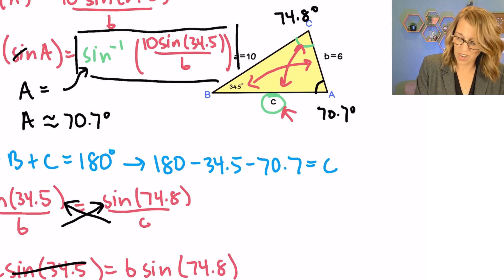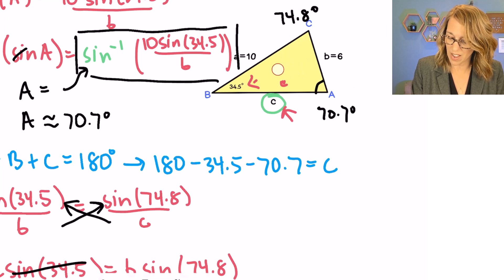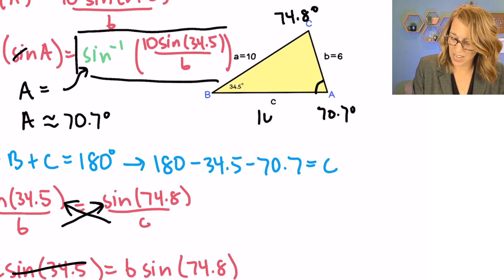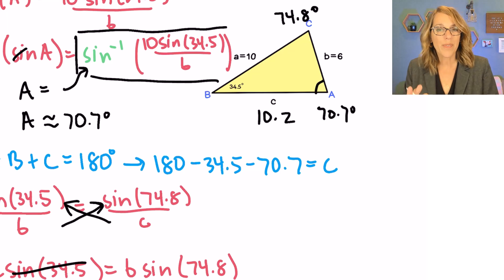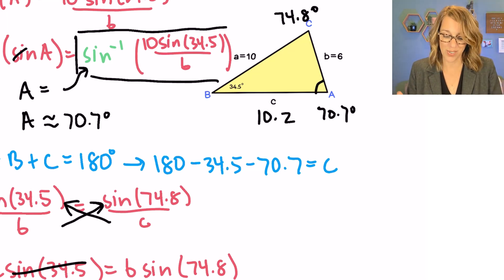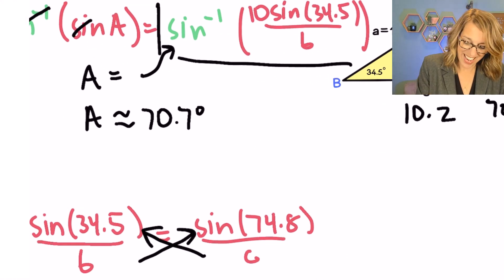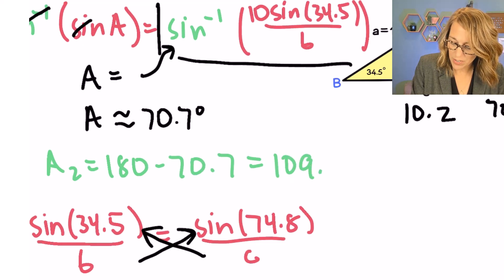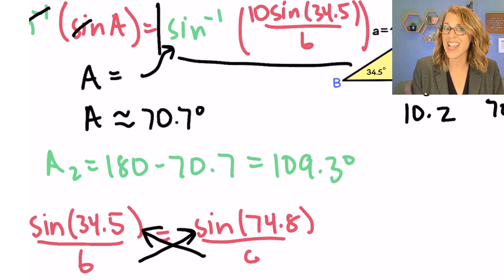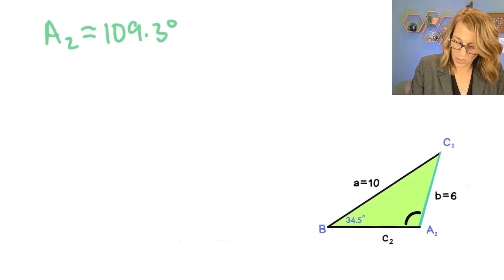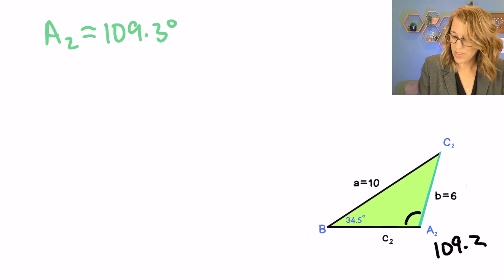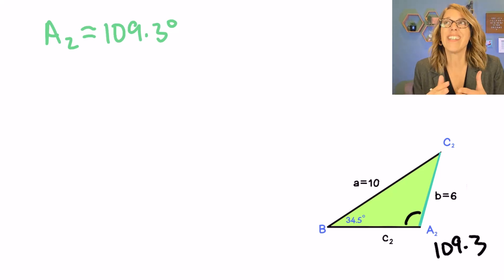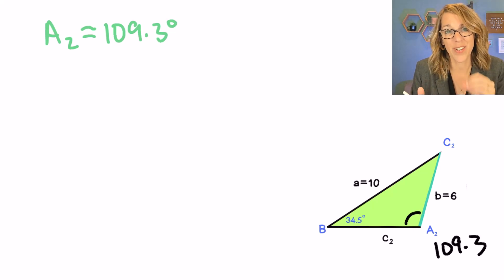Let me go back up to that triangle — I can erase a bunch of this now because I've got everything — and fill in that last value of 10.2. Now we're ready for triangle number two. Let's go back and grab that second angle A.